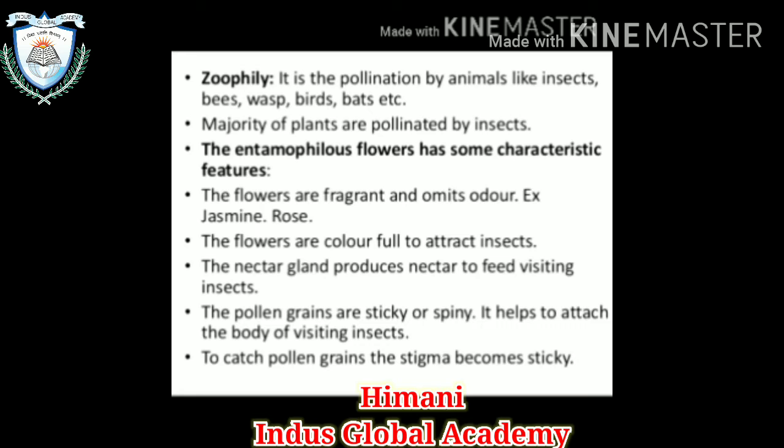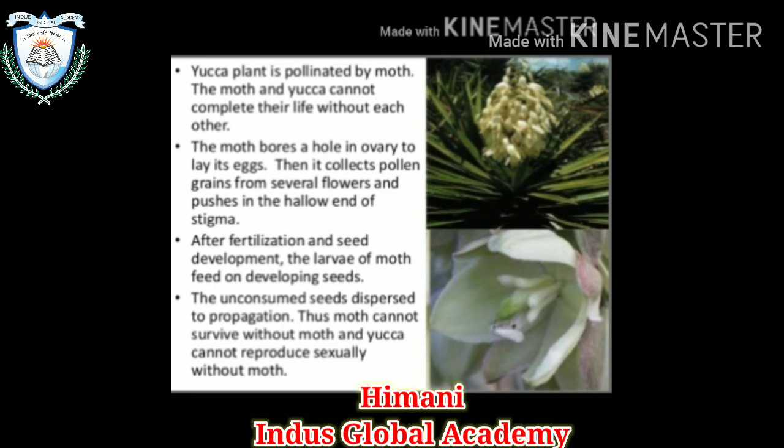The majority of plants are pollinated by insects. The entomophilous flower, which is pollinated by insects, has some characteristic features. First, the flowers are fragrant and emit odor — for example, jasmine and rose. The flowers are colorful to attract insects. The nectar glands produce nectar to feed visiting insects. The pollen grains are sticky or spiny, which helps them attach to the body of visiting insects. The stigma also becomes sticky to catch the pollen grains.